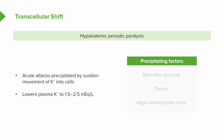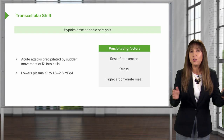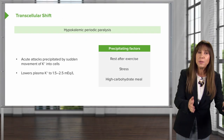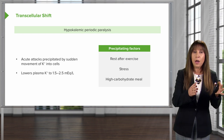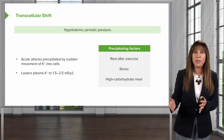Hypokalemic periodic paralysis is precipitated by things that cause transcellular shift: rest after exercise, stress — which activates beta-adrenergic receptors — and high-carbohydrate meals. High-carbohydrate meals induce insulin secretion, and insulin drives potassium uptake into the cell.